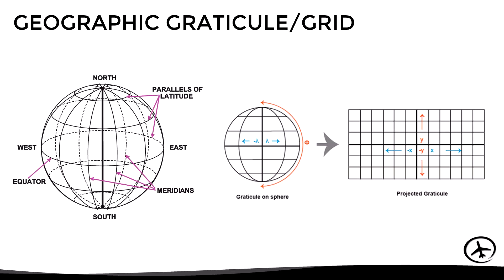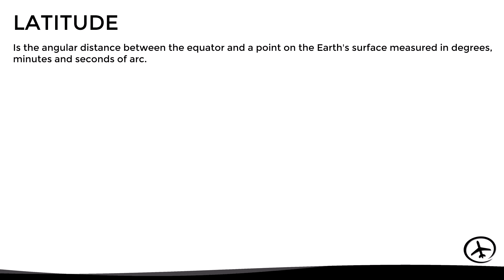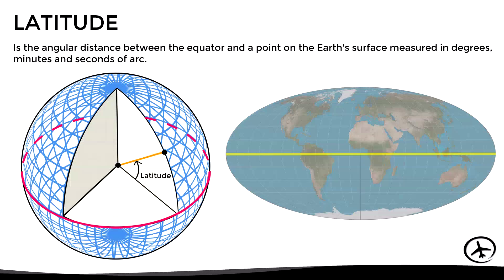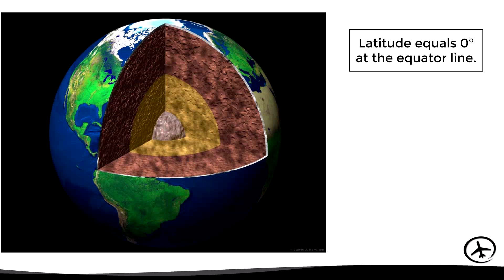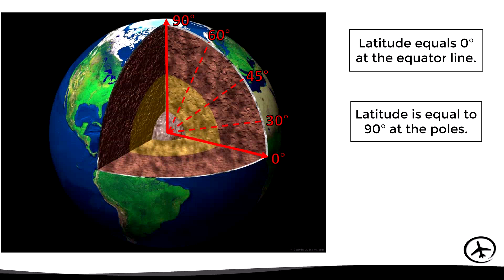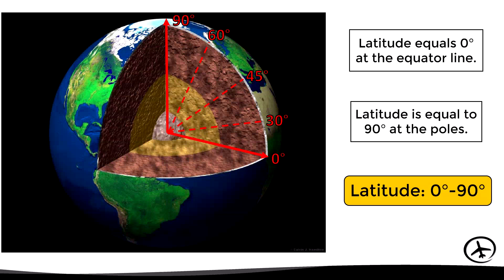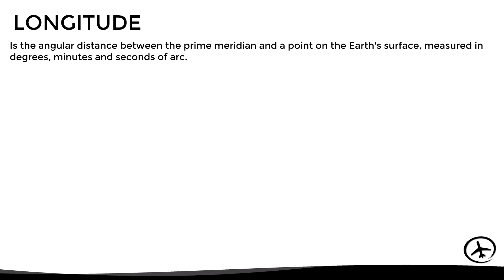Latitude is defined as the angular distance between the equator line and a point on the earth's surface, measured in degrees, minutes, and seconds of arc — in simpler words, how far north or south a point is. Latitude is actually an angle measured from the center of the earth, where the equator line represents zero degrees. Latitude equals zero degrees at the equator and increases gradually to 90 degrees at each of the poles, so latitude goes from zero to 90 degrees north or south.